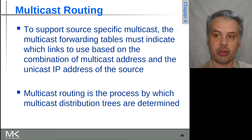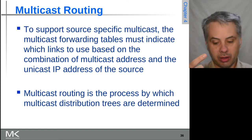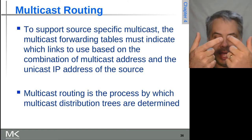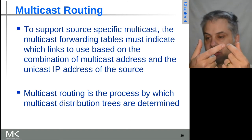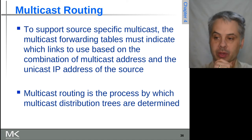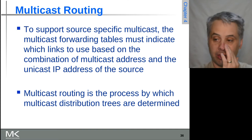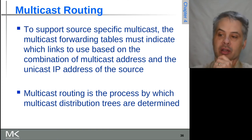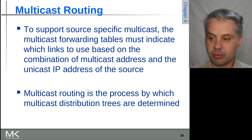For source-specific multicast, the forwarding table needs to know which links to use, which is a combination of the multicast destination address and the source unicast IP address, because that's what defines the source-specific multicast session. Multicast routing is how we use this information to work out what the distribution trees are for the multicast traffic.